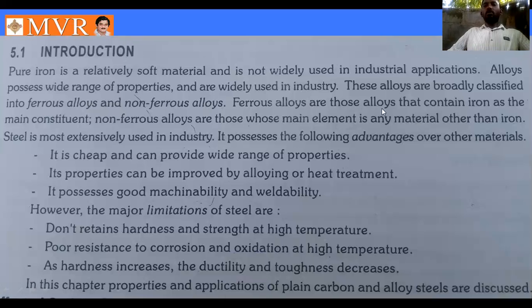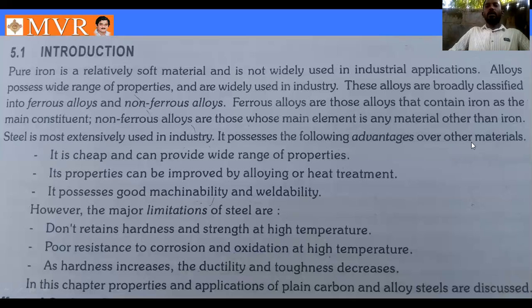Ferrous alloys are those in which iron is the main constituent element. Non-ferrous alloys are those where the main element is any material other than iron. Coming to our main topic, steel is the most extensively used material in industry. It possesses the following advantages over other metals.